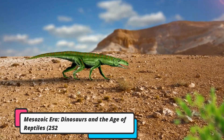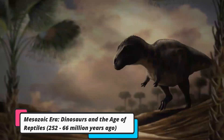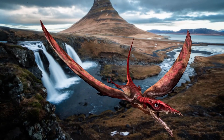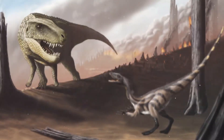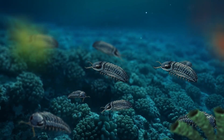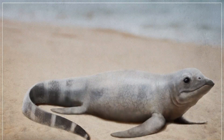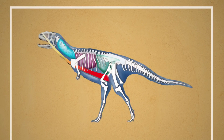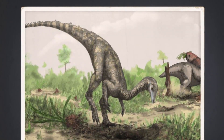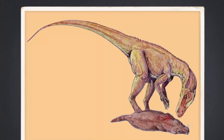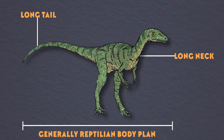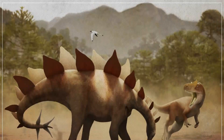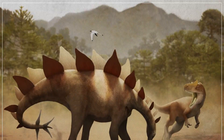Mesozoic Era: dinosaurs and the age of reptiles, 252 to 66 million years ago. The Mesozoic Era, often referred to as the Age of Dinosaurs, was marked by the dominance of reptiles. Dinosaurs, ranging from the colossal Tyrannosaurus rex to the diminutive Compsognathus, ruled the land. Meanwhile, in the oceans, ichthyosaurs and plesiosaurs reigned supreme. The skies were patrolled by pterosaurs, the first vertebrates to achieve powered flight. This era also bore witness to the breakup of the supercontinent Pangaea, giving rise to the continents we recognize today.